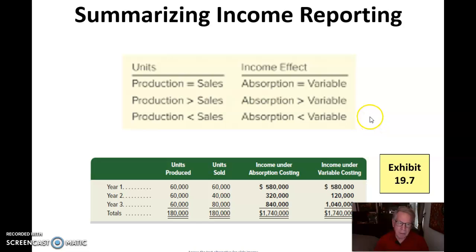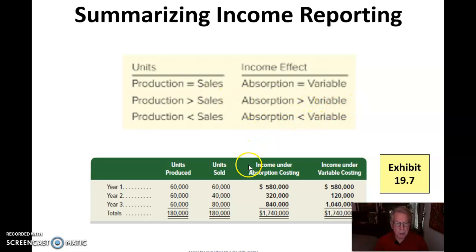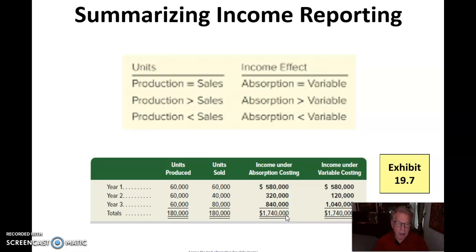Eventually those units will be expensed when they're sold. In our example, that was exactly what happened in the third year when we produced less than what we sold, and in that case absorption costing will result in a lower income than variable costing. But over the course of those three years, we produced exactly what we sold, so the total income is the same under both absorption and variable costing over that three-year period.